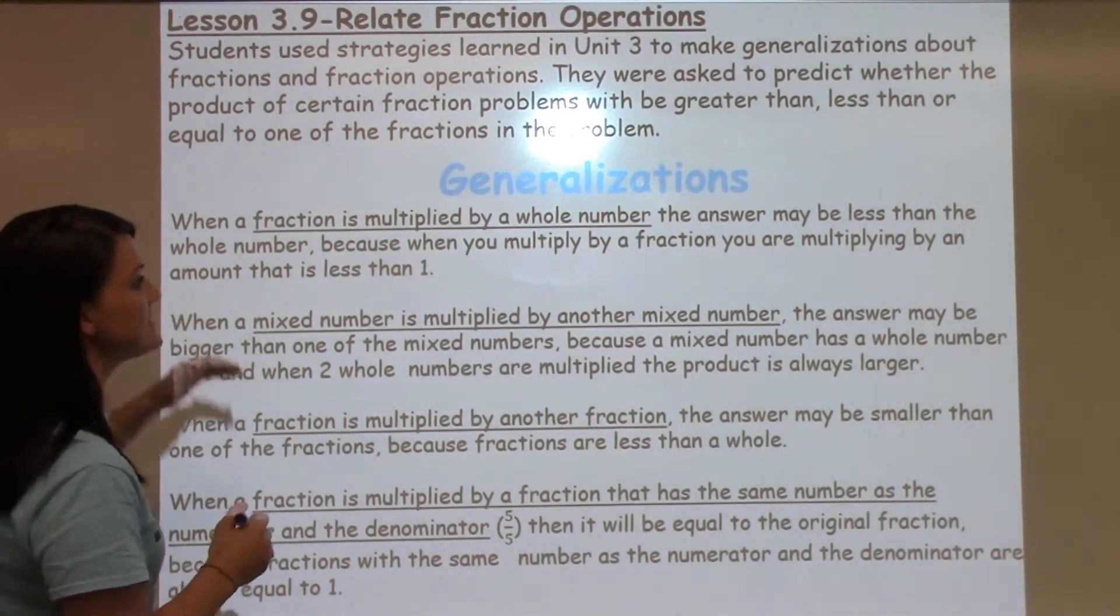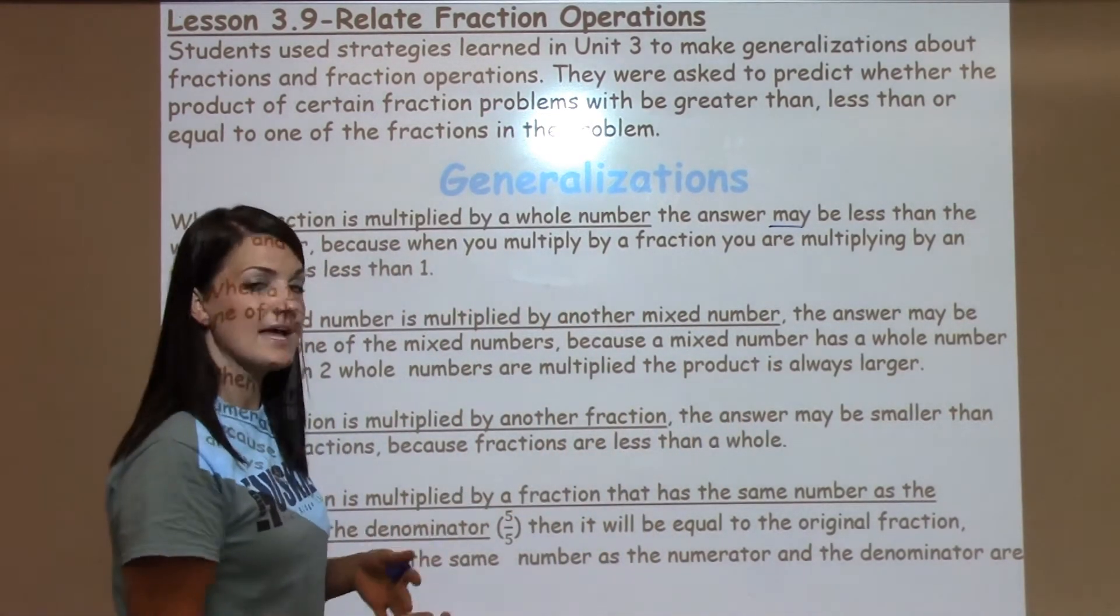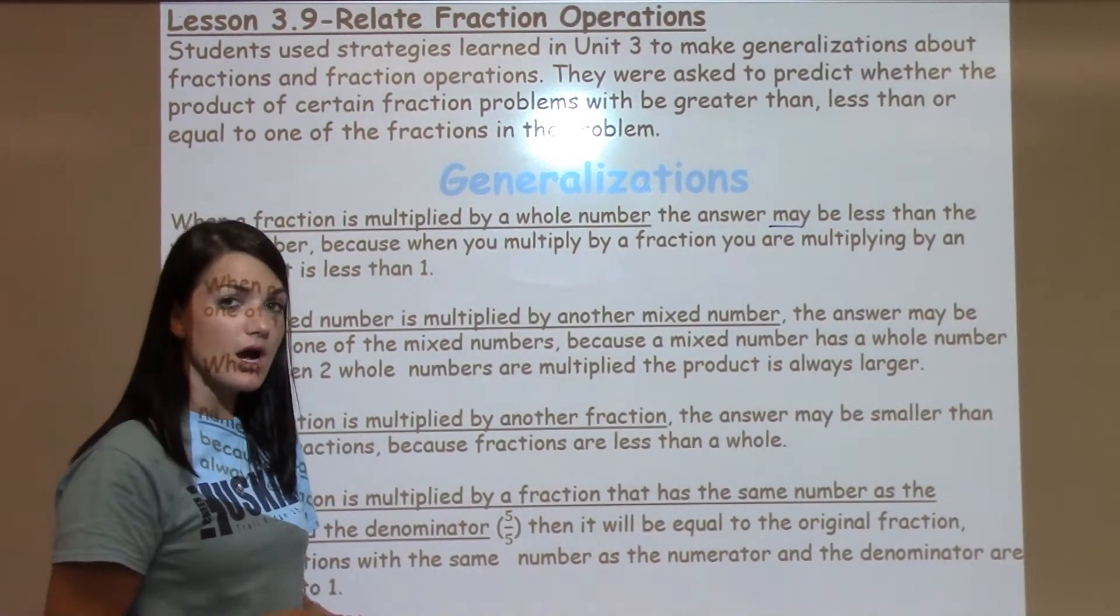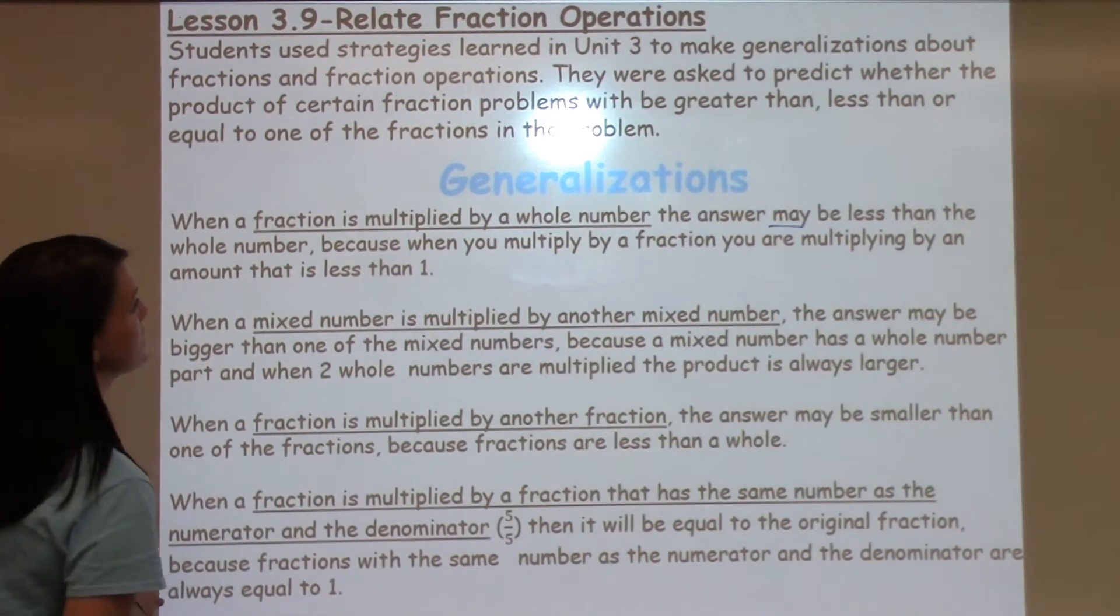All of them say that the answer may be a certain thing. It may be less, it may be more, because these aren't rules, they just happen most of the time, but there are exceptions to some of these, so that's why they're not called rules, they're just called generalizations.